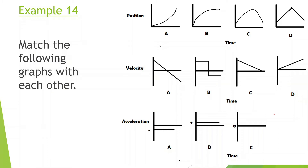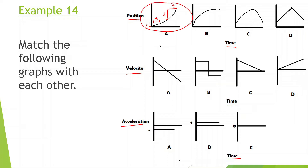Match the following graphs with each other — we have a position versus time graph, a velocity versus time graph, and an acceleration versus time graph. In this first position versus time graph, it's kind of flat at the beginning — taking a long amount of time but a very short amount of distance. But over here, in a very short amount of time, there's a huge distance covered, so it's getting faster and faster. We're starting out at zero speed and getting faster in the positive direction — that shows a positive acceleration.